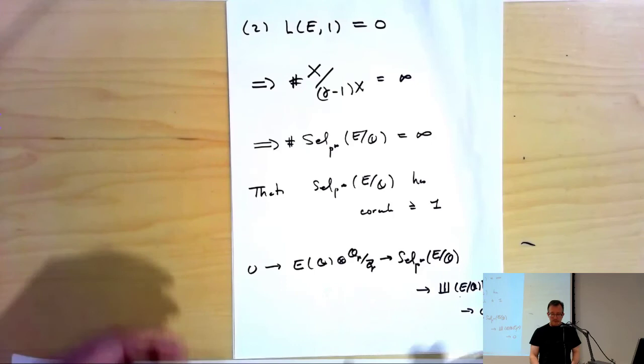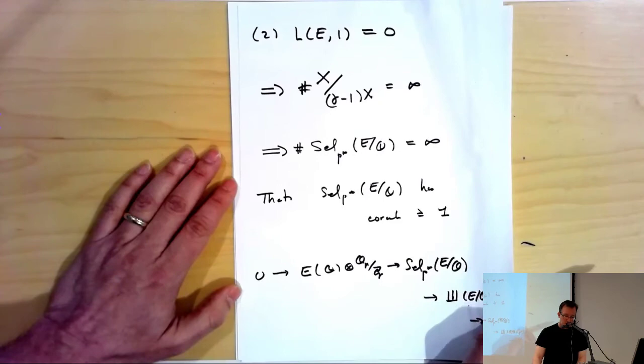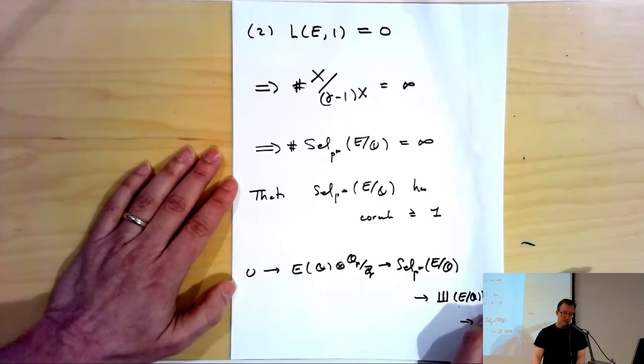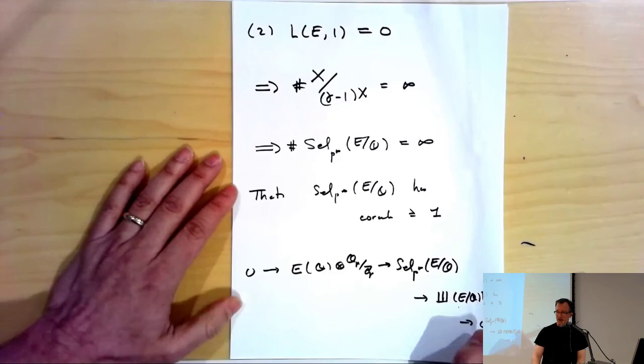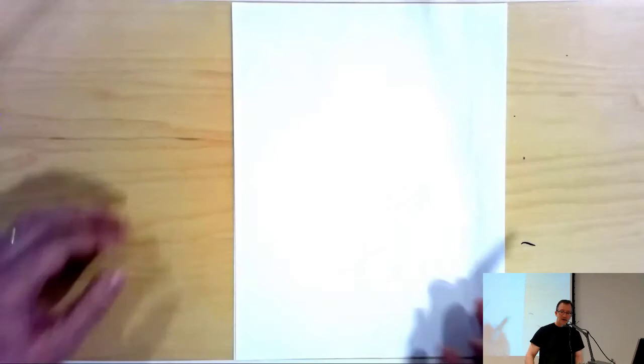You can think of this as evidence towards the rank part of BSD: when the L-function vanishes, the Selmer group has infinite order and positive corank, which it must have if the rank of the elliptic curve were positive. This theorem is far from the last word on what we know about the main conjecture.